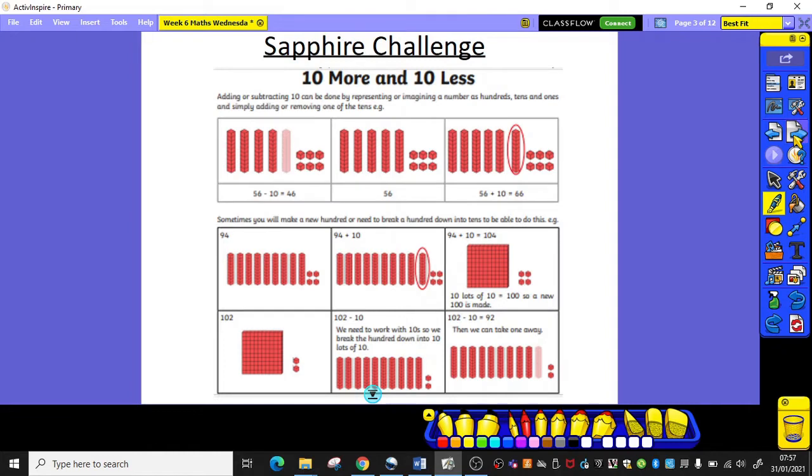If you're going to do the Sapphire Challenge, then I'd like you to start shortly and you're going to be focusing on 10 more or 10 less than a number. If I take a number here such as 56, then I can see that 10 less is, I'm going to be taking away 10, so I'm going to end up with 40 as opposed to 50, but my 6 ones are going to stay the same. So 56 subtract 10 is 46. Equally 56 add 10, I'm just increasing my 10s. I've gone from 5 tens to 6 tens. So, what I've now ended up with by adding 10 is 66 and my 1s stay the same.